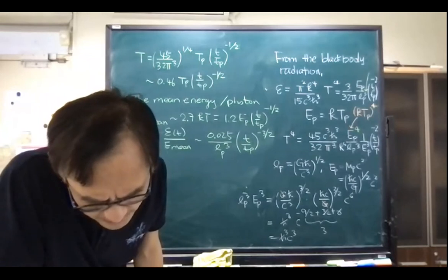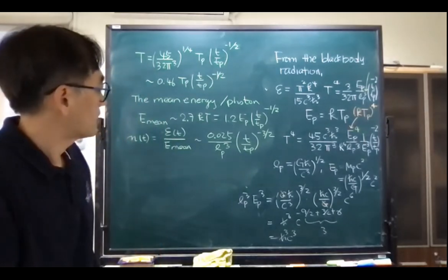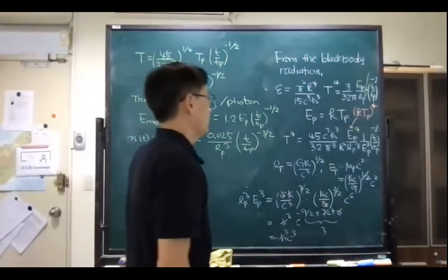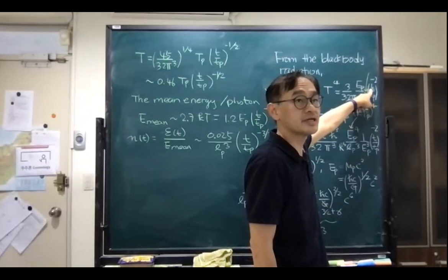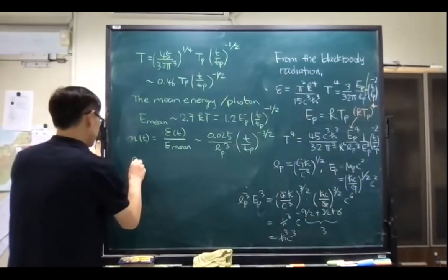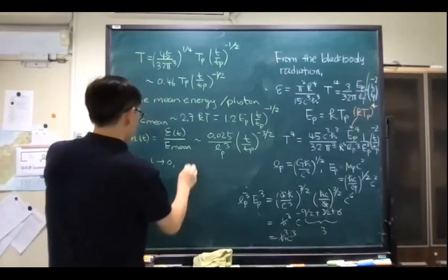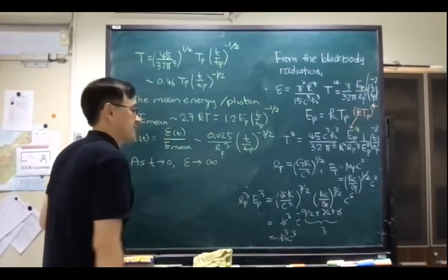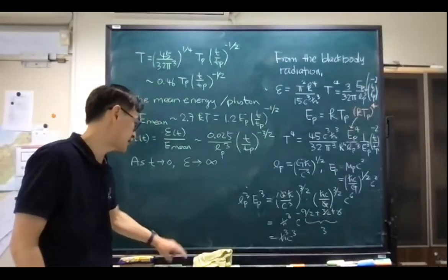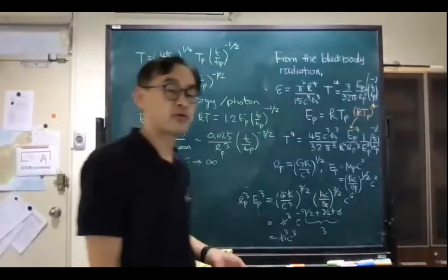If t goes to arbitrarily small — smaller than t_p — we have t^(−2), so as t goes to zero the energy density goes to infinity. So your theory now breaks down. In the Friedmann equation with a radiation-only universe, the density will be infinite at t going to zero.